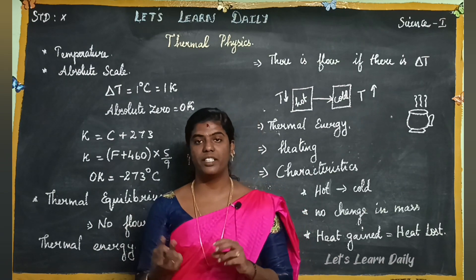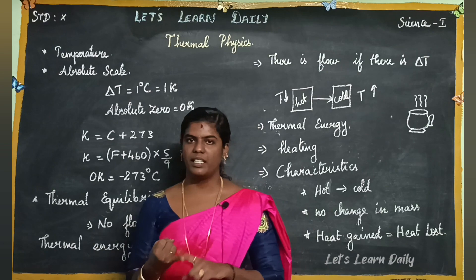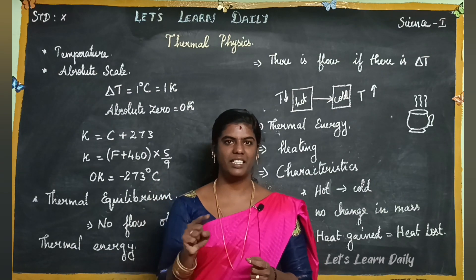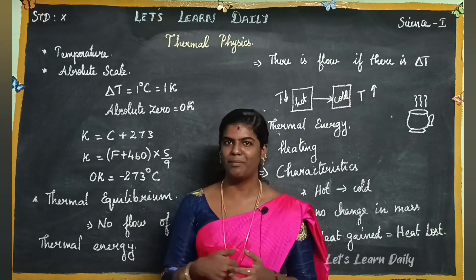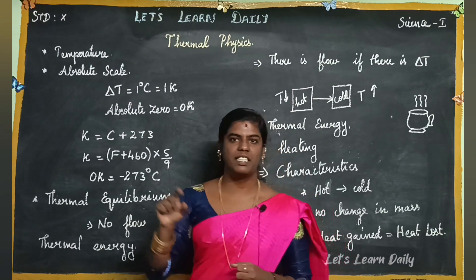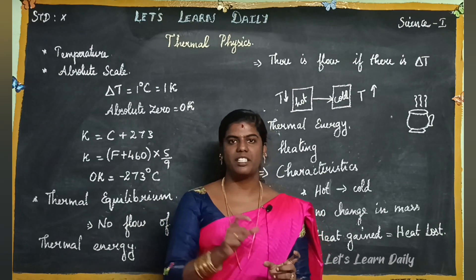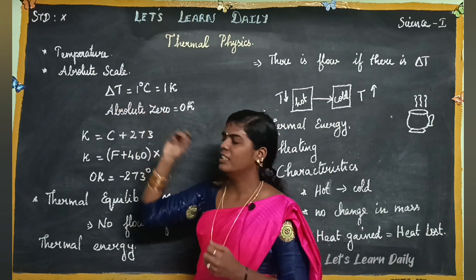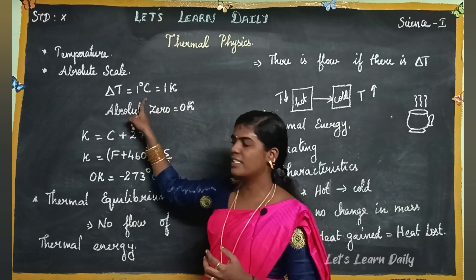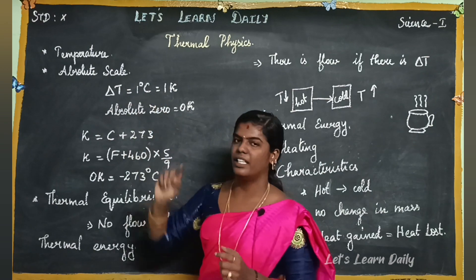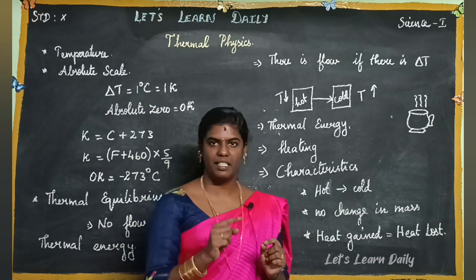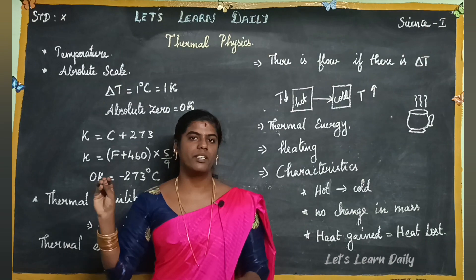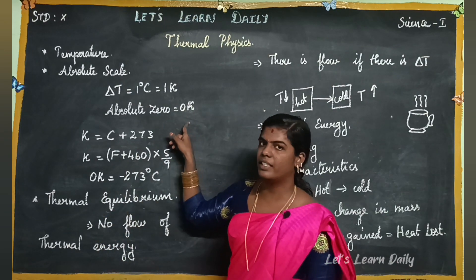There are three scales: Kelvin, Celsius, and Fahrenheit. Kelvin is also called the absolute scale. Absolute zero is 0 Kelvin. In scientific research, 0 Kelvin is used as a reference point.